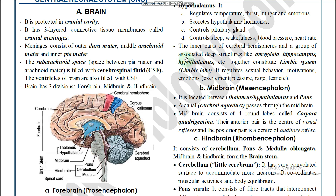The inner parts of the cerebral hemispheres and associated deep structures — including the amygdala, hippocampus, and hypothalamus — form the limbic system. The limbic system is mainly associated with emotions and is called the emotional brain. It regulates sexual behavior, motivations, emotions, excitement, and fear.